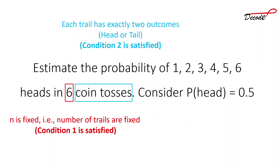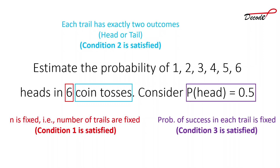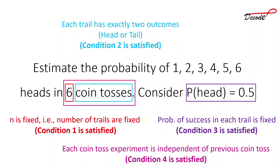The third condition is the probability of success must be fixed on every trial. Since we define getting a head as success, the probability of success is fixed, so condition three is satisfied. The fourth condition is each coin toss must be independent of the previous one — tossing a coin six times, every toss is independent, so condition four is also satisfied. Whenever you want to apply binomial distribution to any problem, you must check these four conditions. If all four are met, you can apply binomial distribution.